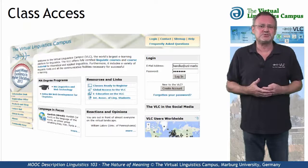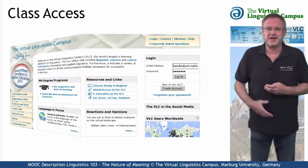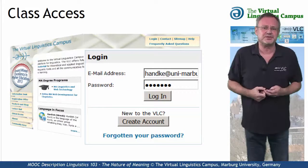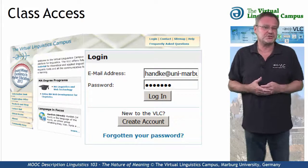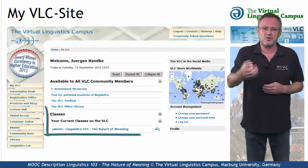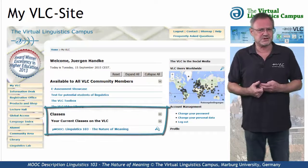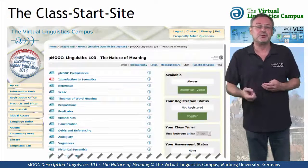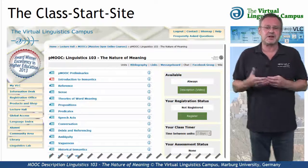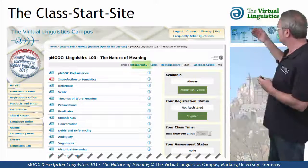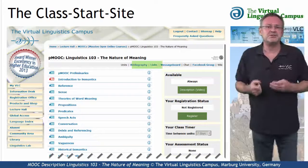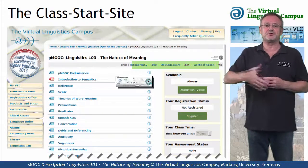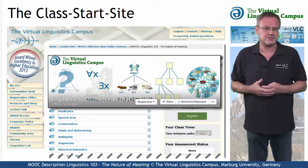If you have a Virtual Linguistics Campus account, which is of course free, accessing the class is quite simple. Just log in with your personal data and you will find the class on your personalised VLC start site under Your Current Classes on the Virtual Linguistics Campus. A click on the class name leads you to the class start site, where you have access to several class-related links, for example to the bibliography, the links section, the class description — which is this video — and links to the social media, for example to the Facebook group associated with this class.